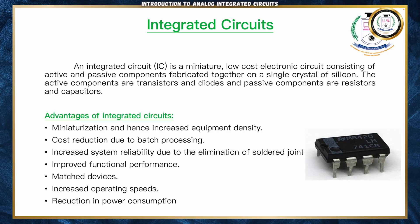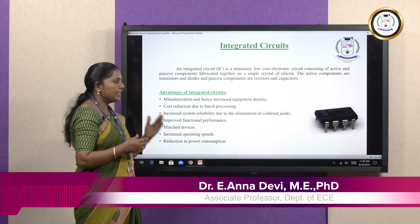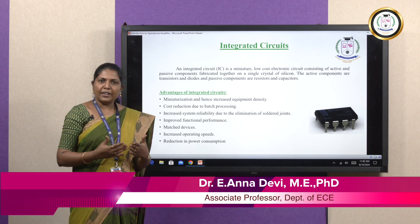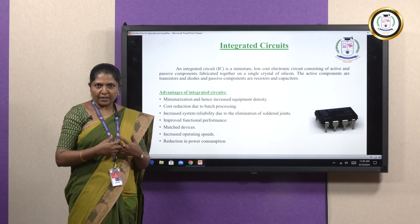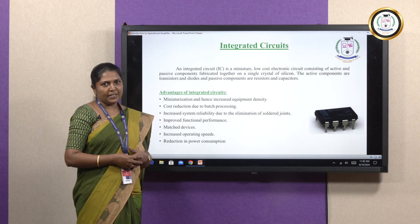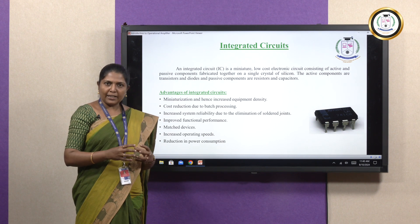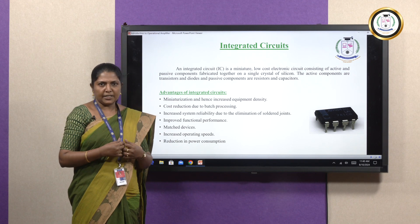First, let us know what Integrated Circuits or ICs are. An Integrated Circuit is a miniature, low-cost electronic circuit consisting of active and passive components fabricated together on a single crystal of silicon. Active components are electronic components which require a power supply for their operation, such as transistors and diodes. Passive components like resistors and capacitors do not require any power supply. An integrated circuit consists of both active as well as passive components, and nowadays all electronic devices have integrated circuits.